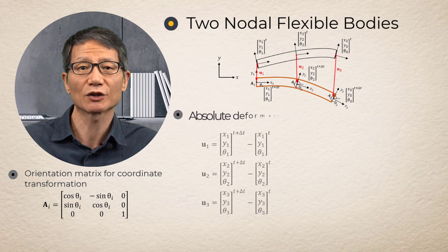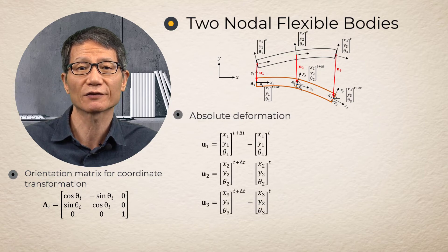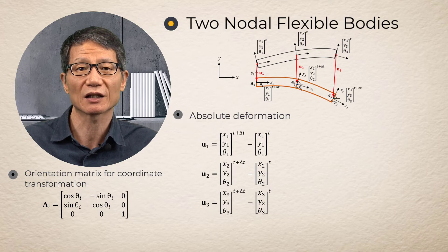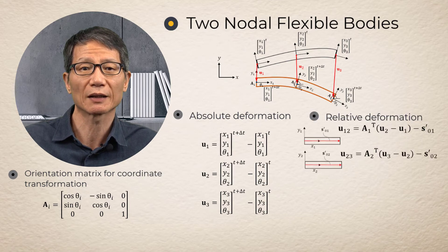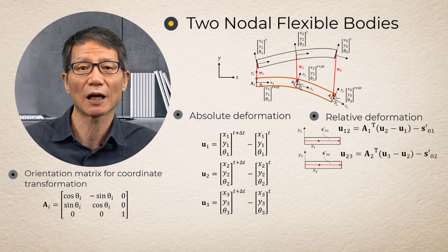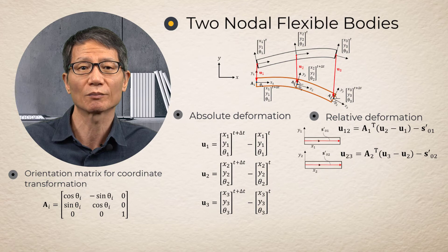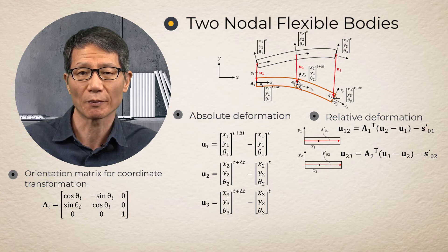Absolute deformation is obtained by taking the difference of two nodal position vectors as in this equation. The relative deformation of a beam element is obtained by multiplying the transpose of the orientation matrix in front of the absolute deformation.